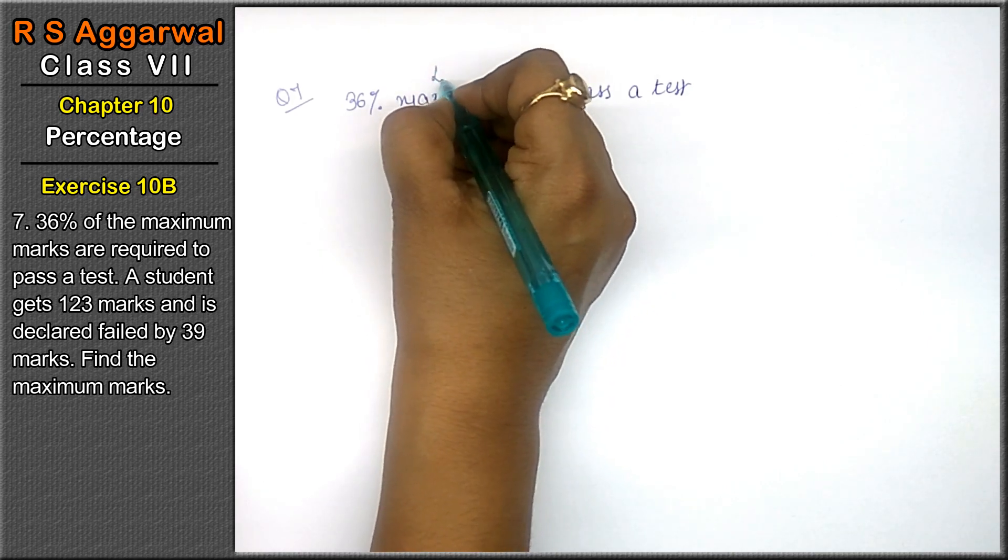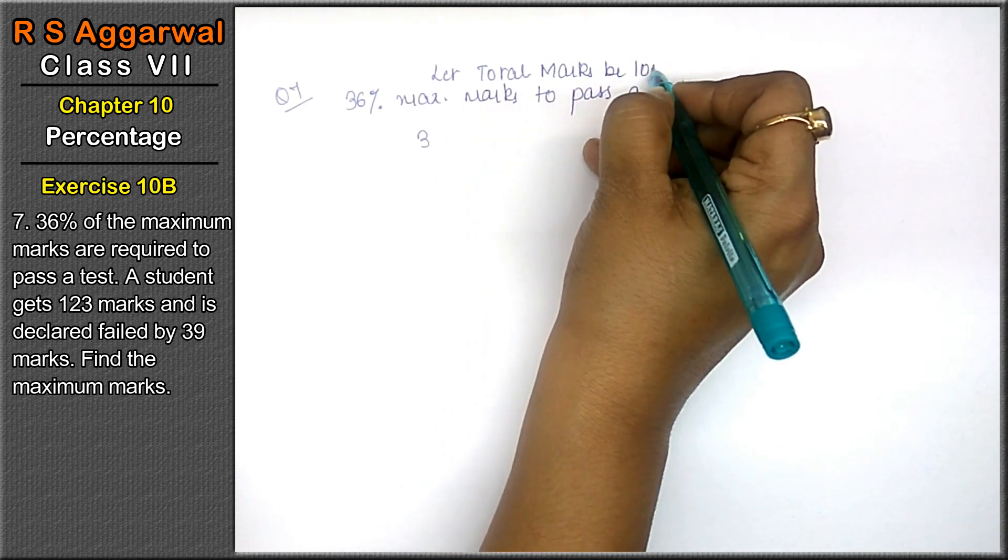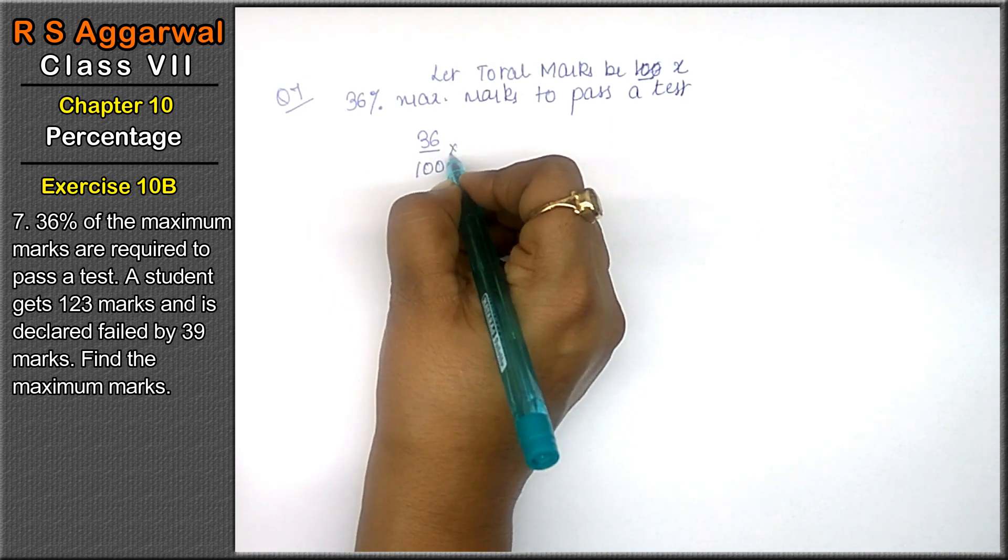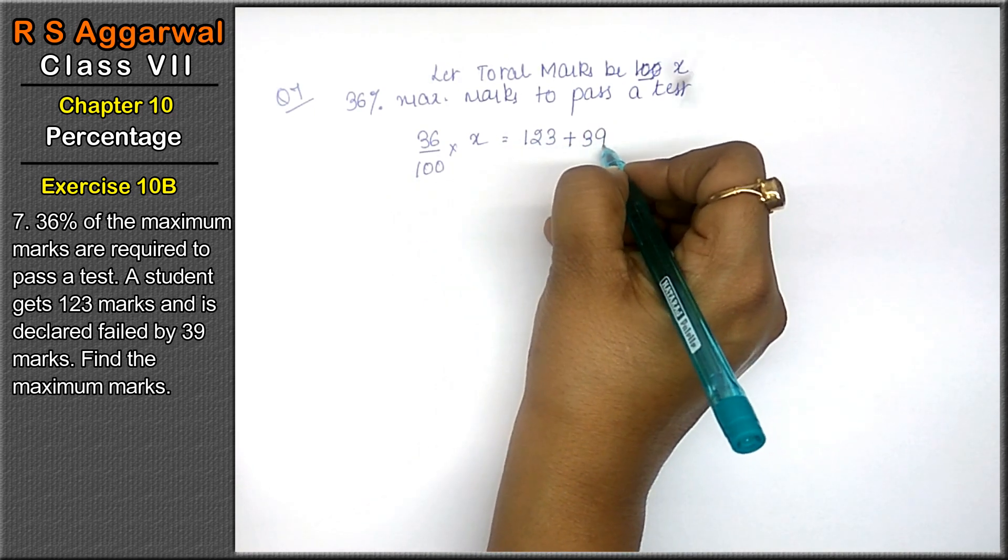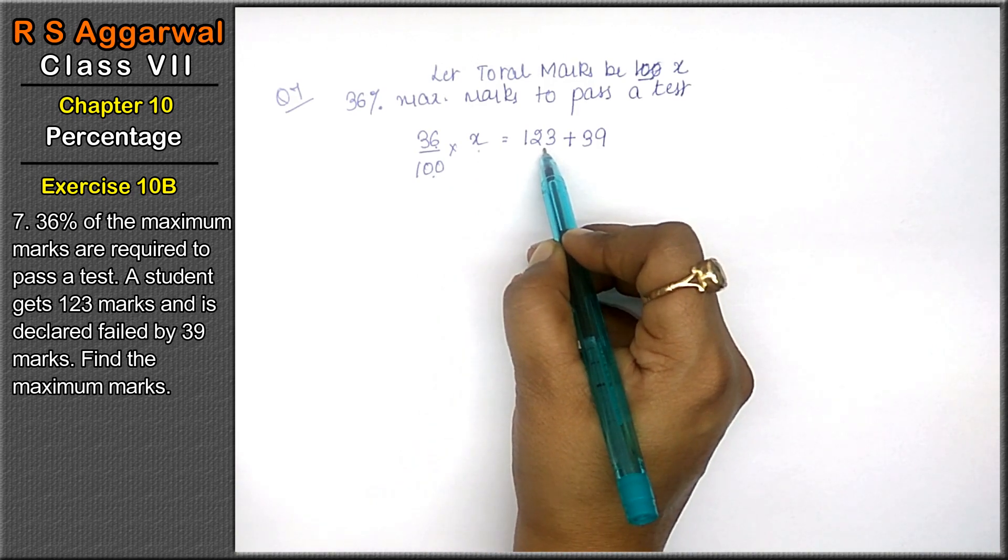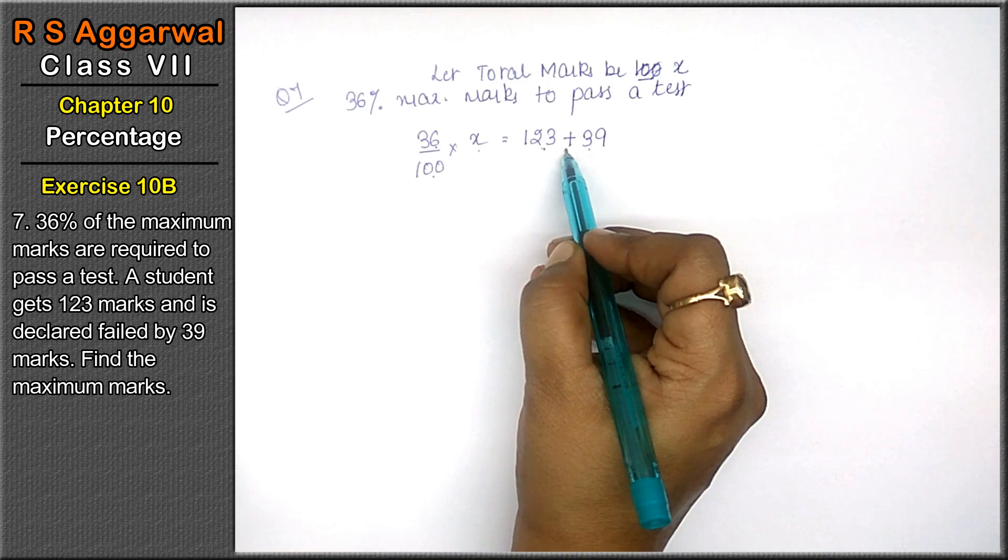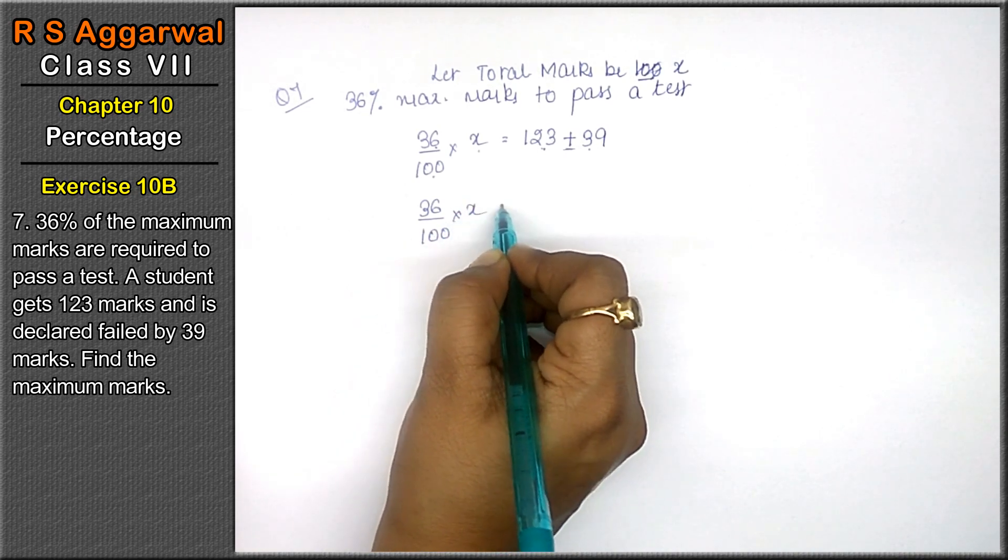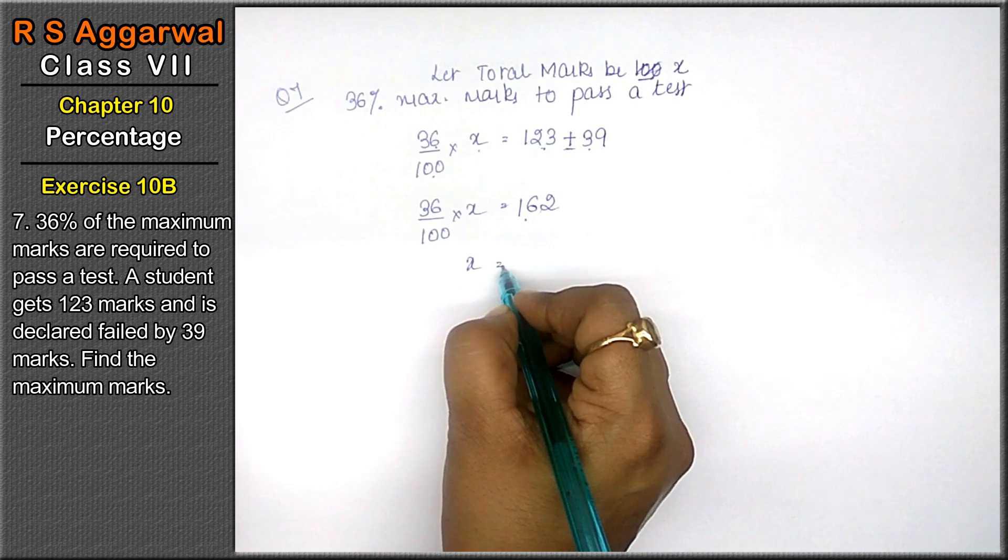Let total marks be x. What will be the next step? 36 upon 100 into x equals to 9 plus 3 is 12, 6 and 1, 162 marks. x as it is, 162.